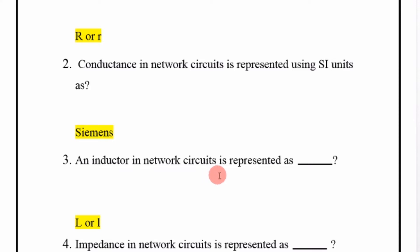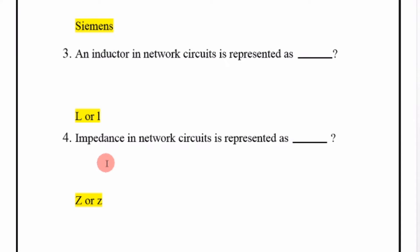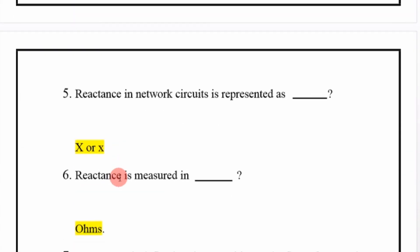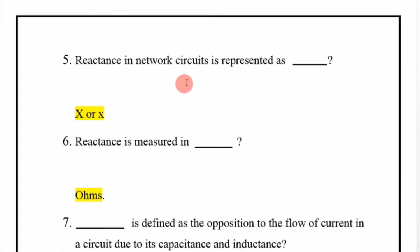An inductor in a network circuit is represented as the letter L. Impedance in a network circuit is represented as Z.